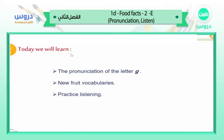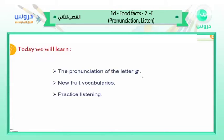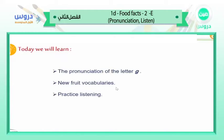Today we will learn the pronunciation of the letter G. Sometimes we pronounce it as the sound 'ja' and sometimes as the sound 'ga' — so 'ja' and 'ga.' We will look at more examples of these two sounds, two kinds of pronunciation.